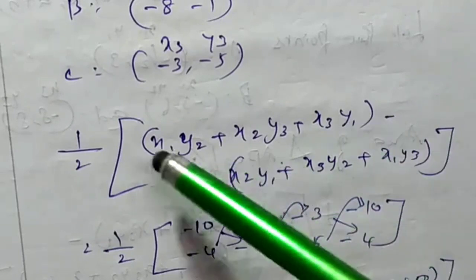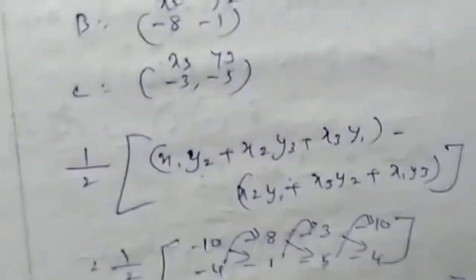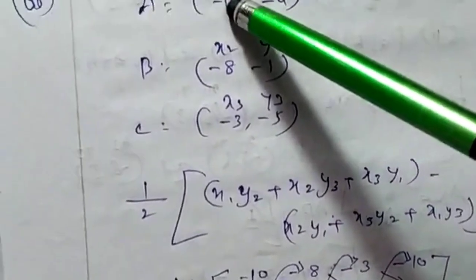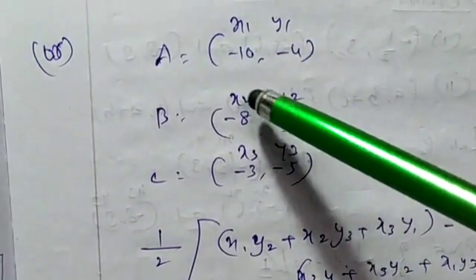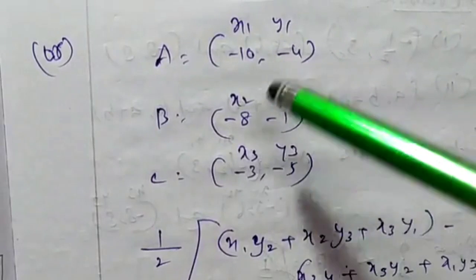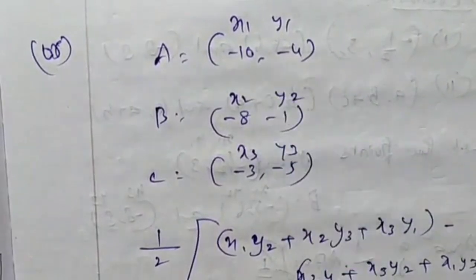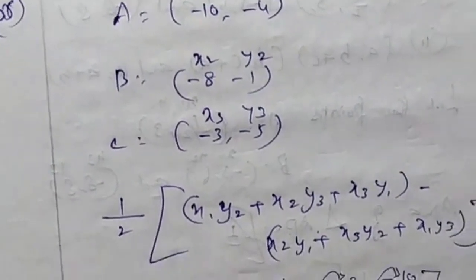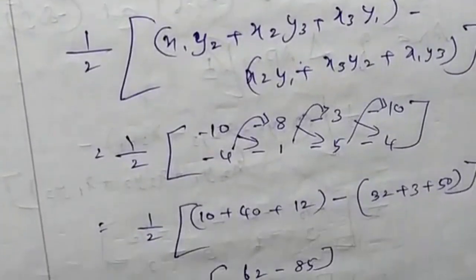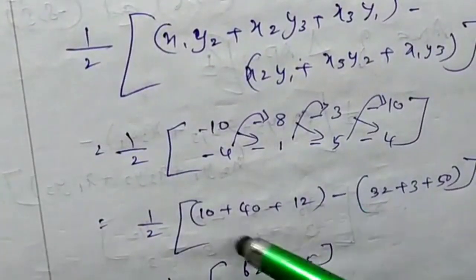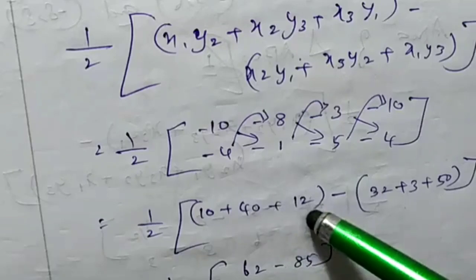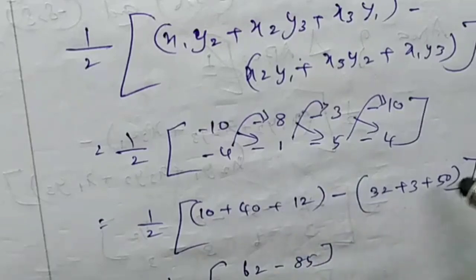The formula is x1 y2, x2 y3, x3 y1. We can apply this formula. If we do this, one by two: 10 plus 40 plus 12 minus 32 plus 3 plus 50.